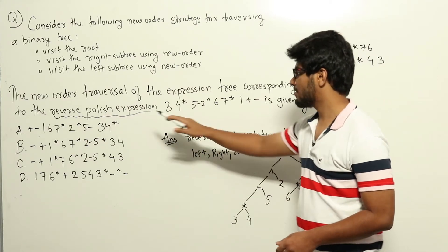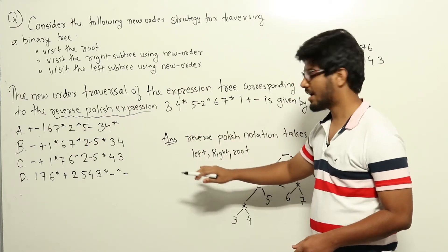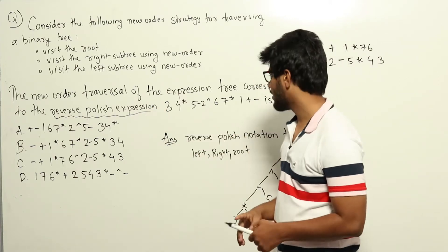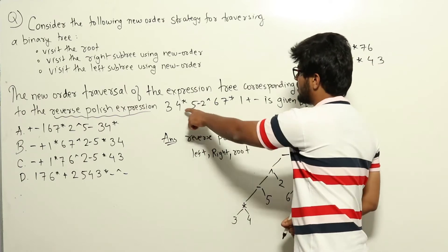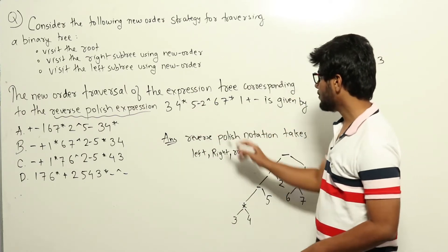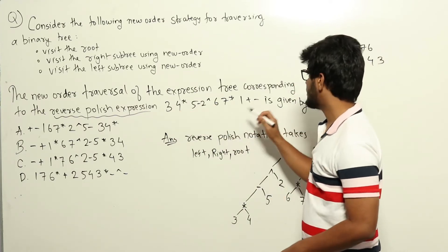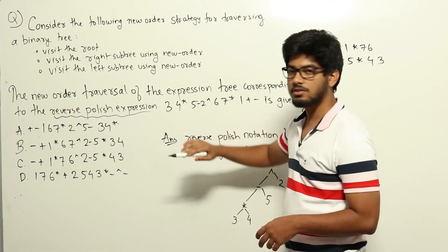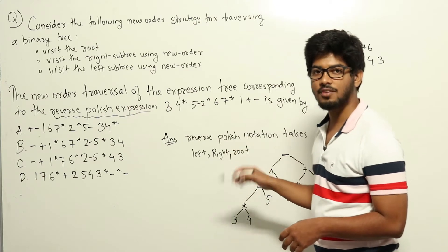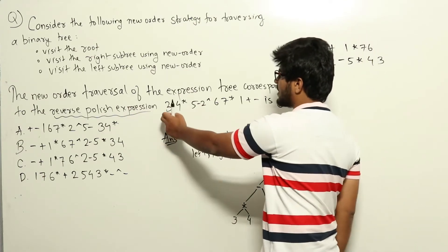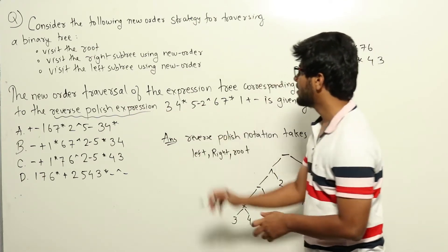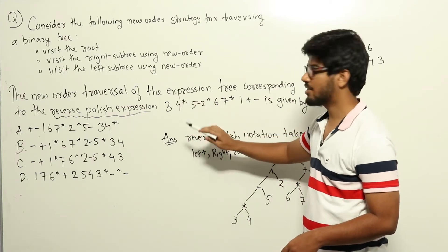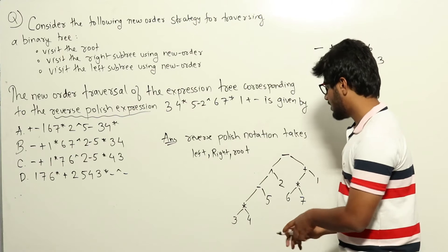Reverse polish expression notation will take the left subtree first, then the right subtree, and then the root — that is reverse polish expression. Based on this, let us try to construct the tree. In reverse polish notation, it first takes left, then right subtree, then root. So if we have something like 3 4 *, we can say that 3 will be the left subtree, 4 will be the right subtree, and star will be the root.